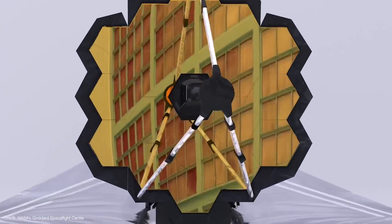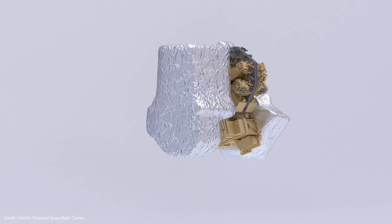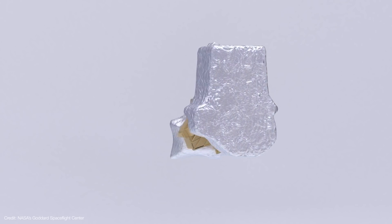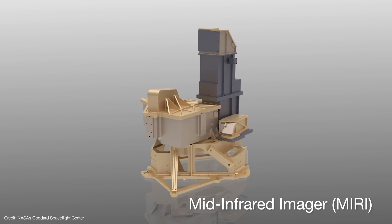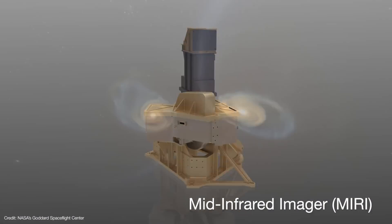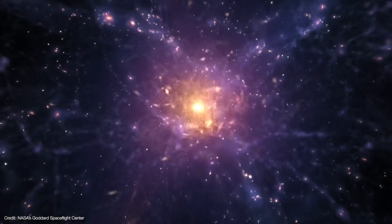Meanwhile, Webb's science instruments are being brought online as they cool to their operating temperatures. They'll run through a series of calibrations and test observations. One of them, the mid-infrared imager, has to be chilled all the way down to just seven Kelvin. In fact, the instruments and the kinds of science they will be used for really ought to be in their own video.